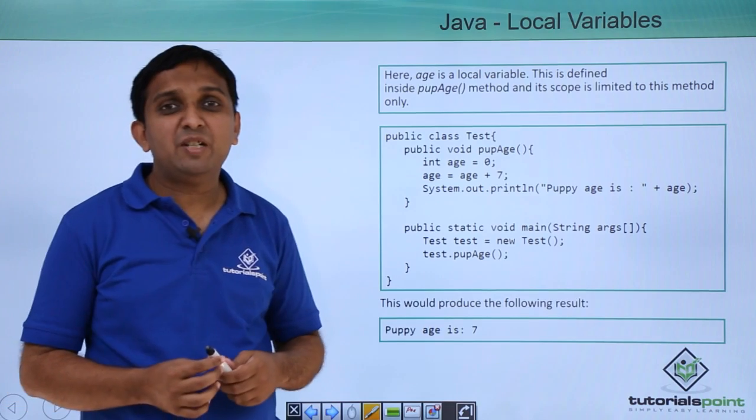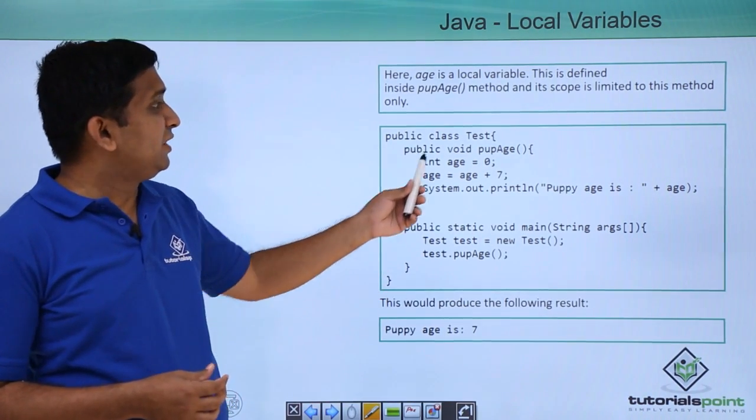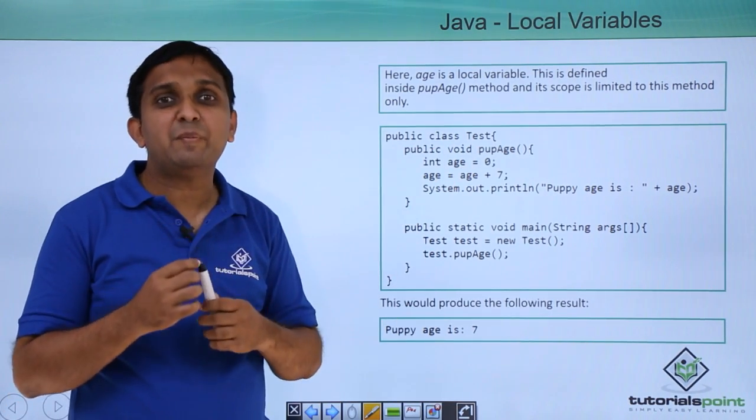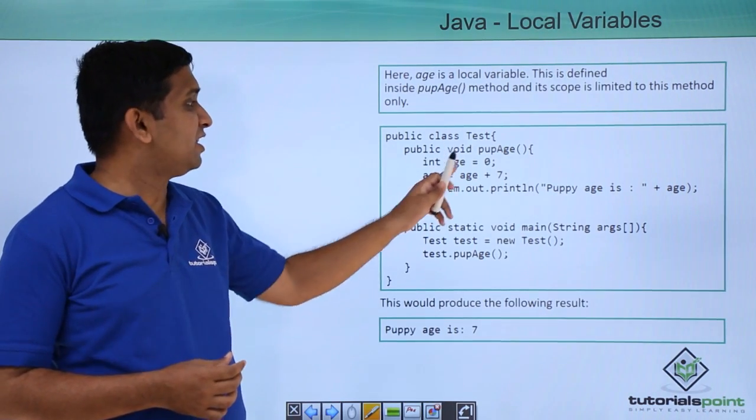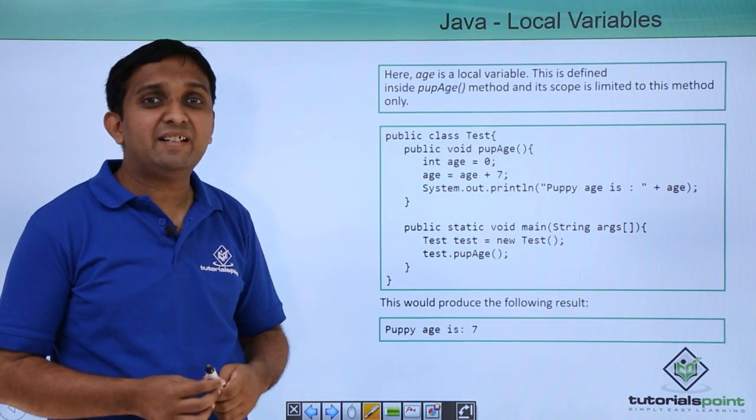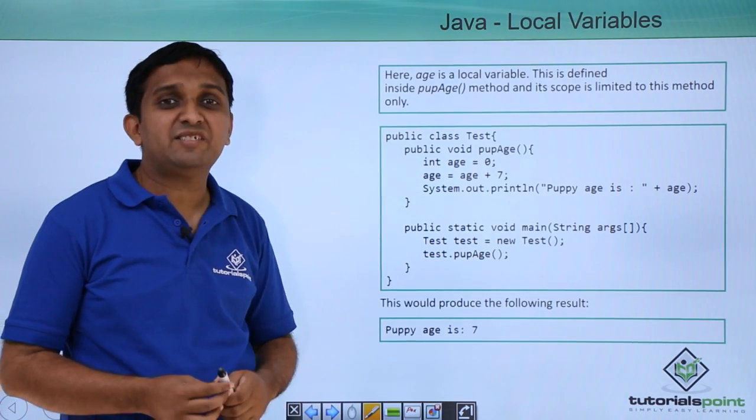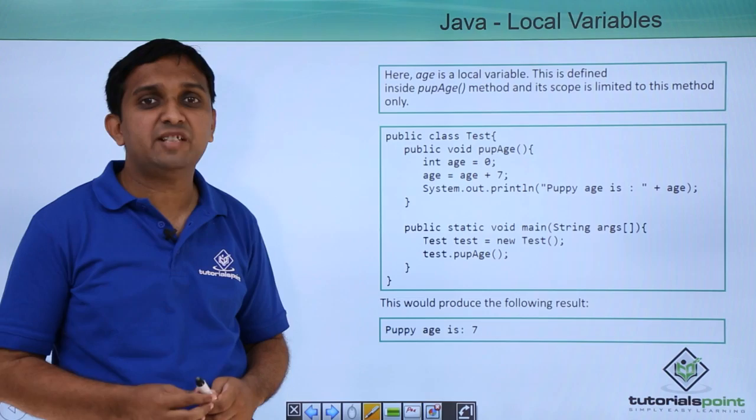Now here is one example shown which is making use of local variables. There is one class which is test class in which one method is there which is pupAge method. Here age is integer declared which is initialized to 0, then 7 is added and value is printed. So you will get the output as 7. Now object is created here for class test and method is called. Output is here 7.